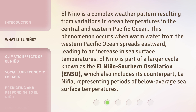El Niño is a complex weather pattern resulting from variations in ocean temperatures in the Central and Eastern Pacific Ocean. This phenomenon occurs when warm water from the Western Pacific Ocean spreads eastward, leading to an increase in sea surface temperatures. El Niño is part of a larger cycle known as the El Niño-Southern Oscillation, or ENSO, which also includes its counterpart, La Niña, representing periods of below-average sea surface temperatures.